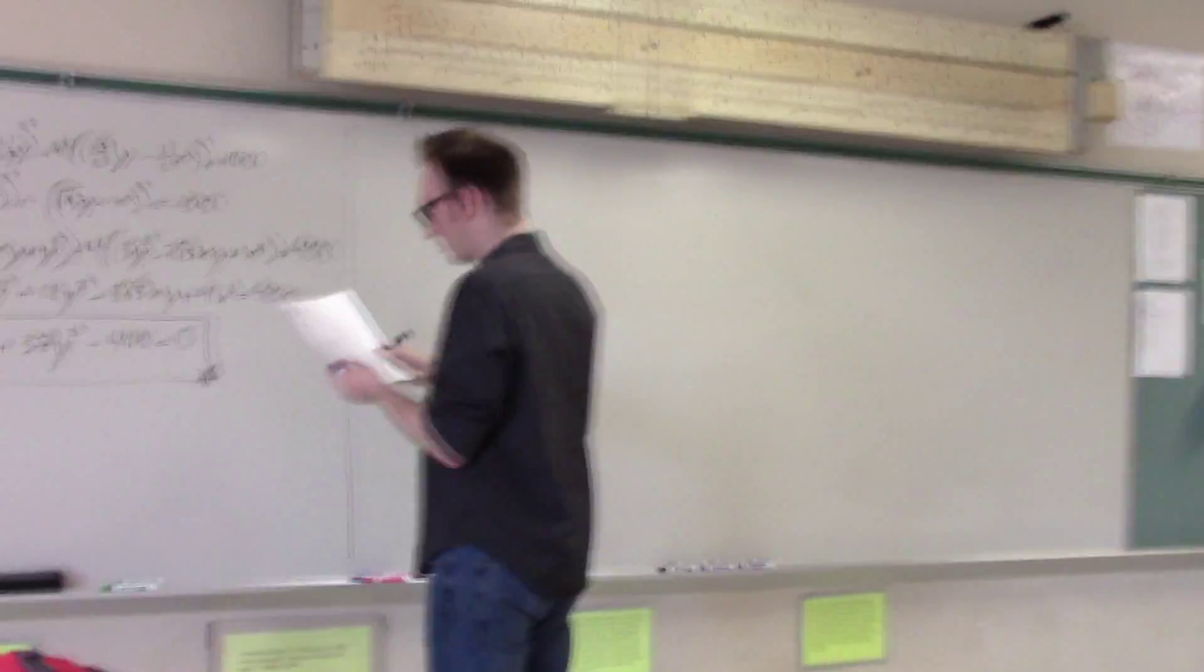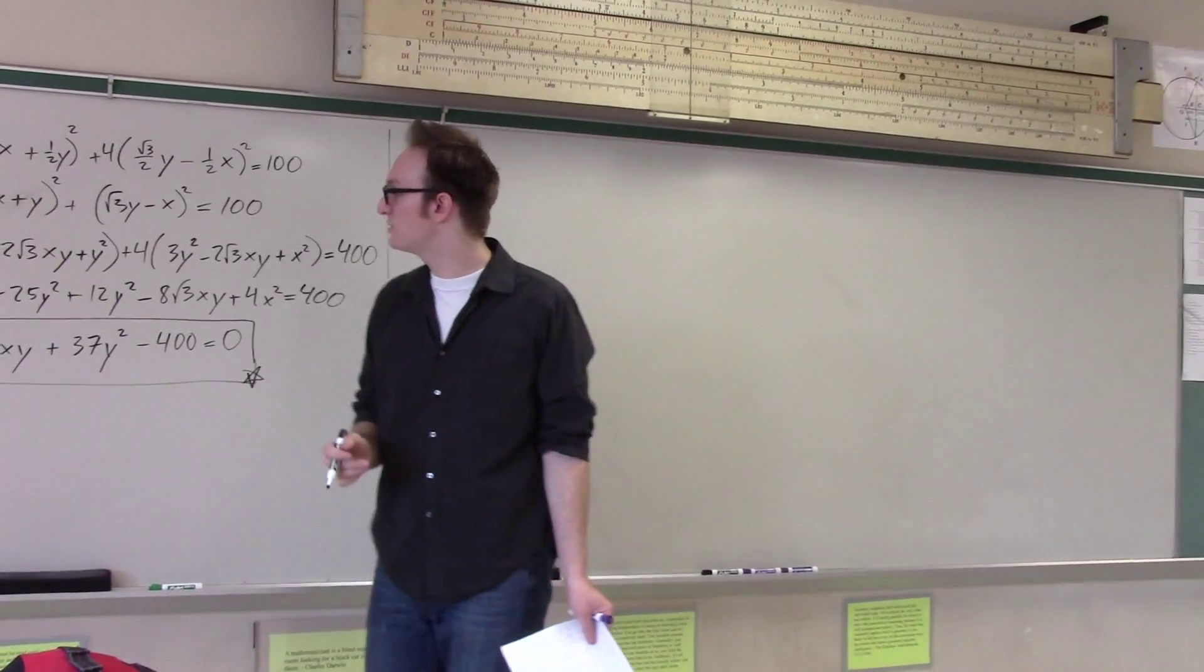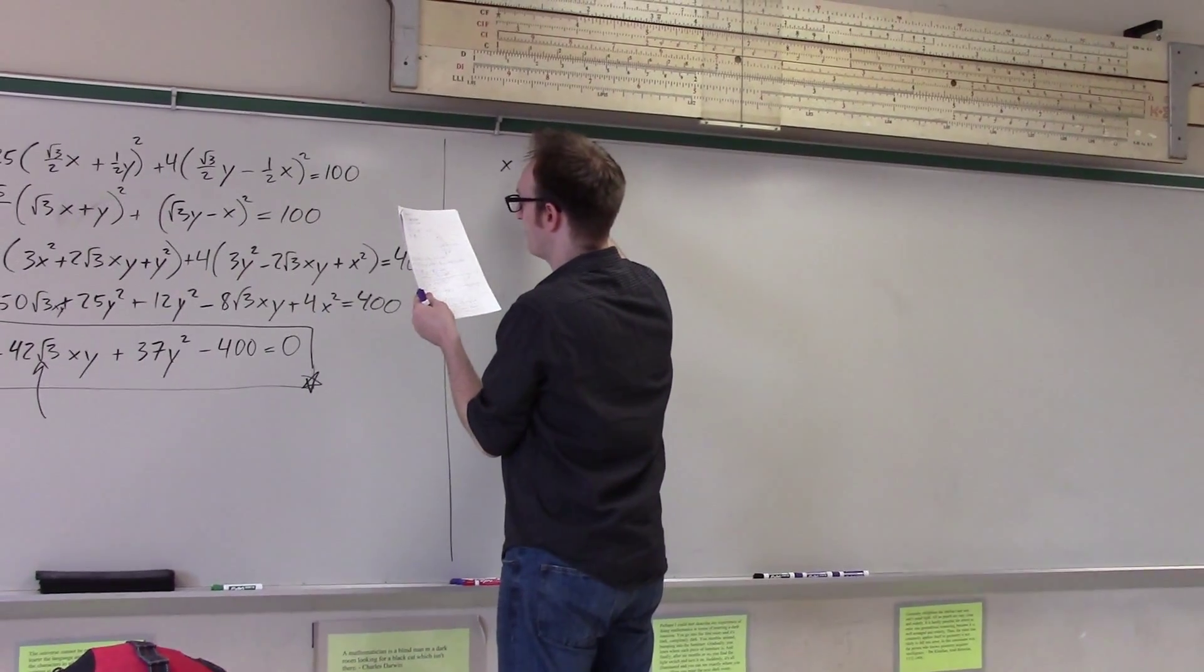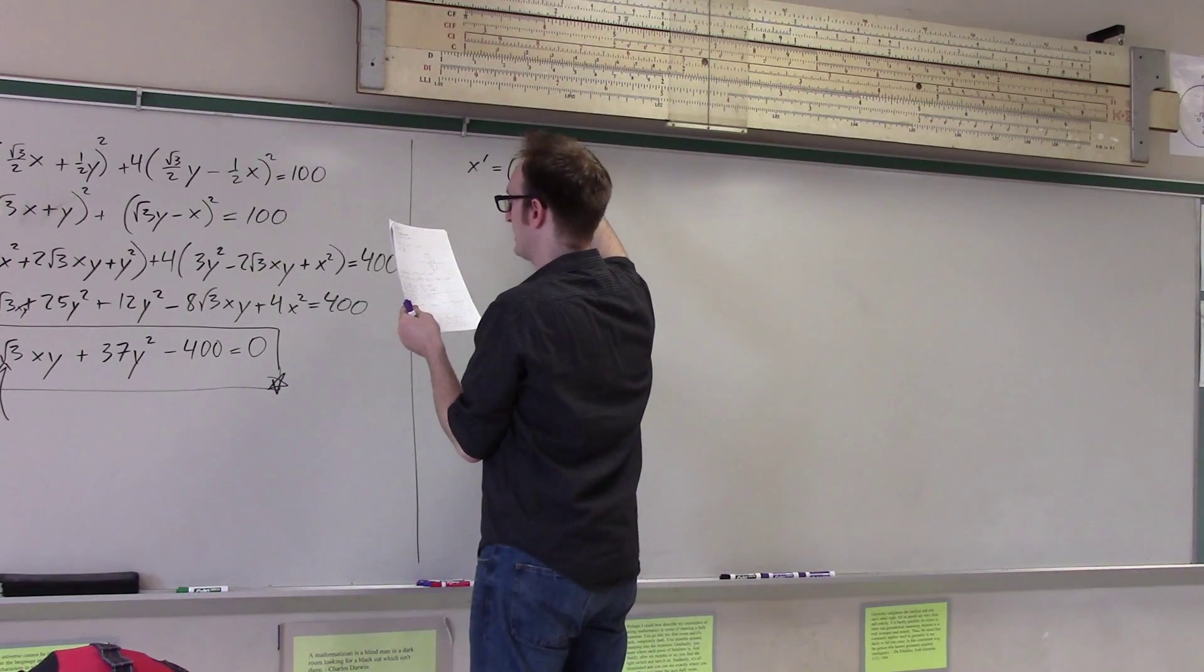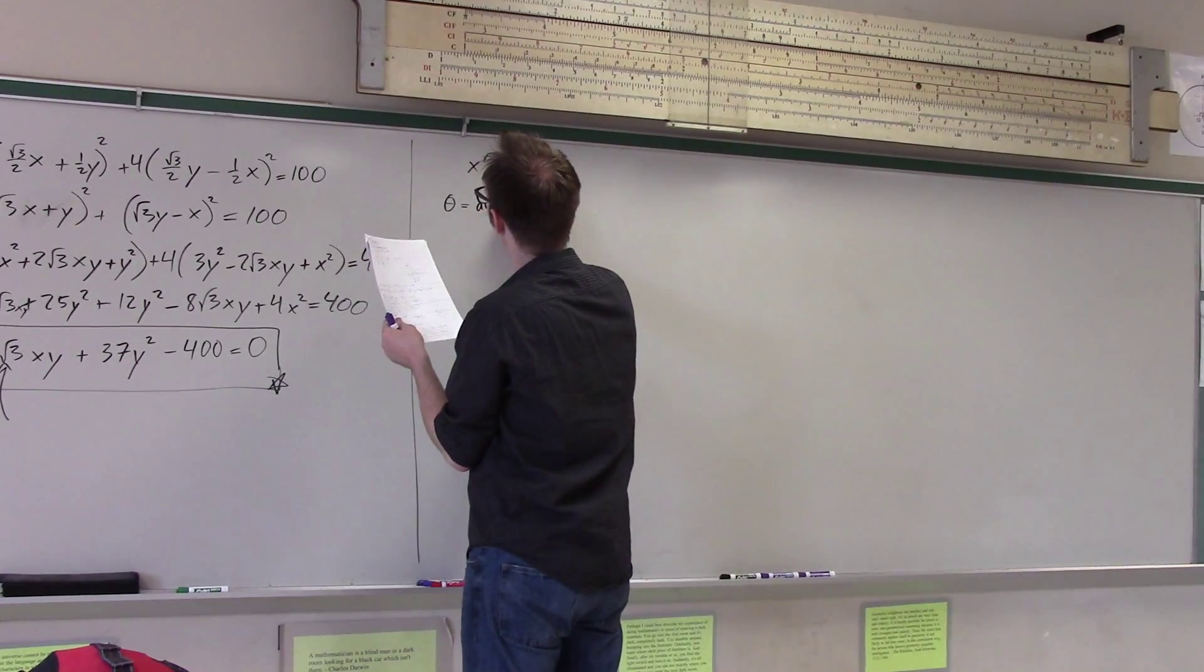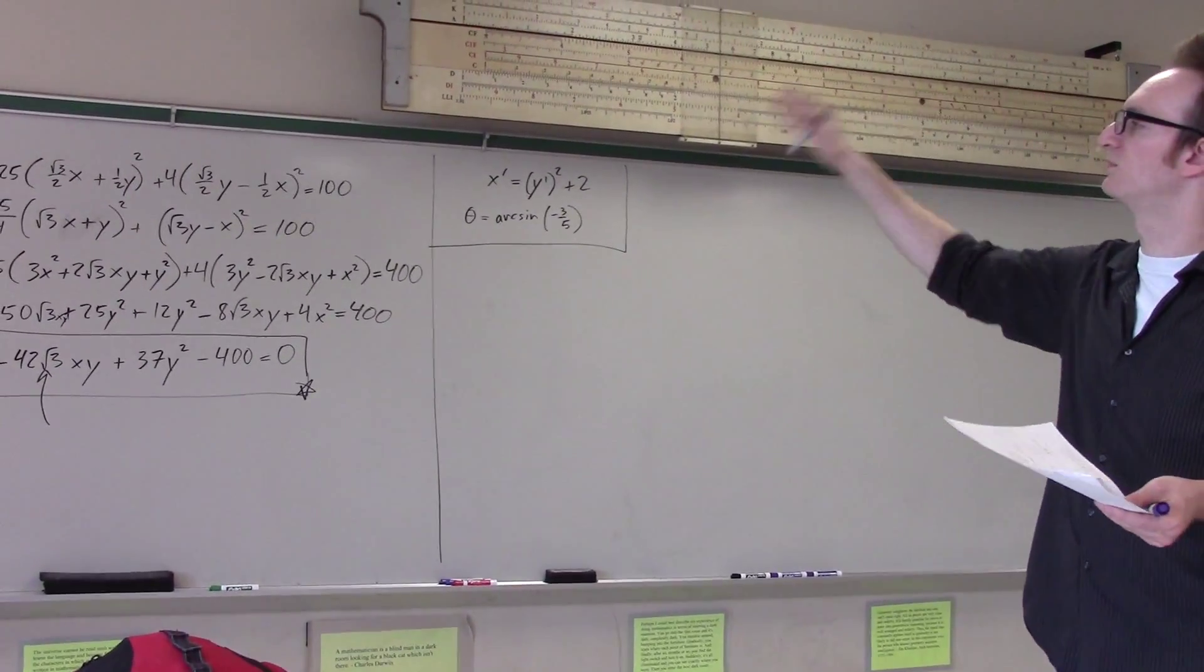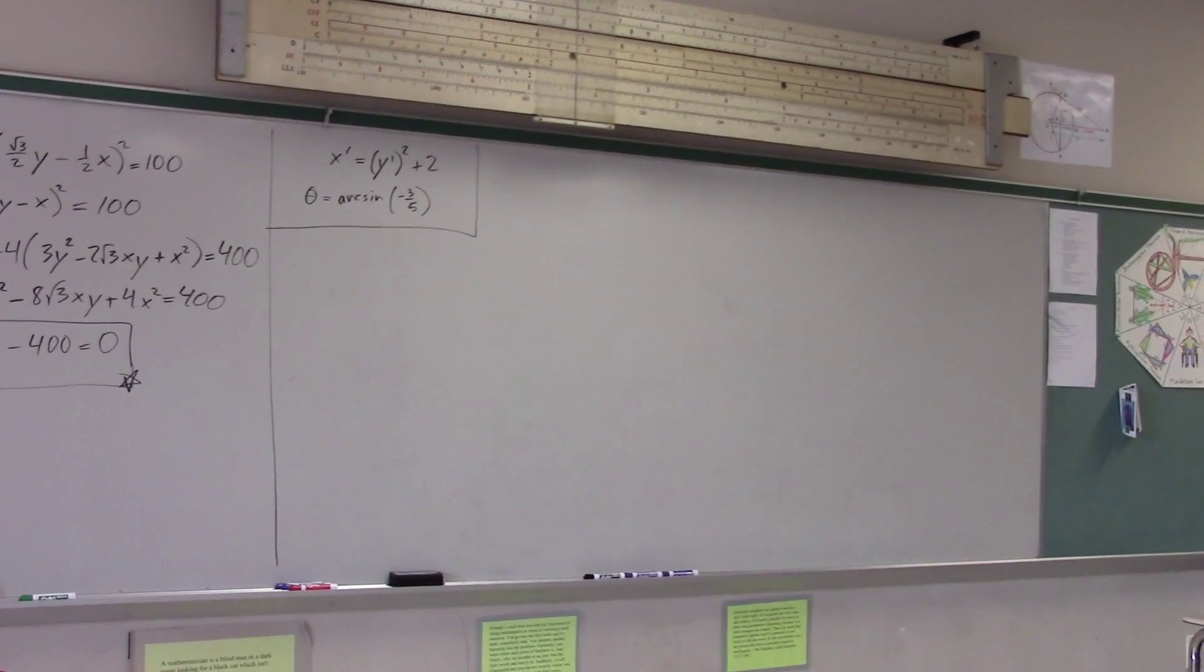So again, I will tell you that what we have is... Oh, and by the way, let me note one more thing, which is... Okay, I won't note it yet. So I'll give you a new equation. The new equation is x prime equals y prime squared plus 2. And now theta is arc sine negative three-fifths. This is the original problem, which... And now, yeah, you can just move it totally. So if they need to look back at the old one, they can just like pause it or whatever.